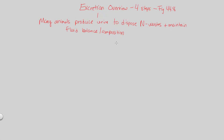How do animals do this? They use four steps that we'll walk through starting now. Number one, the first and foremost step is known as filtration.